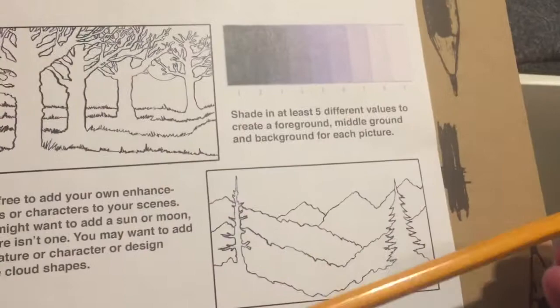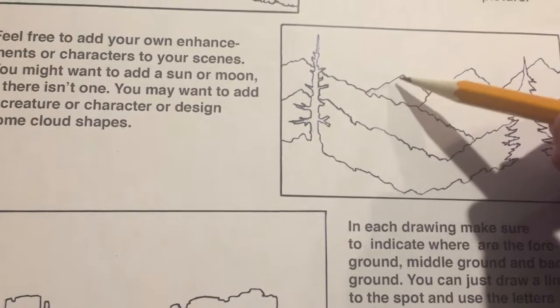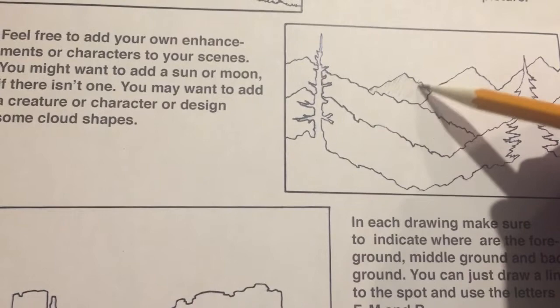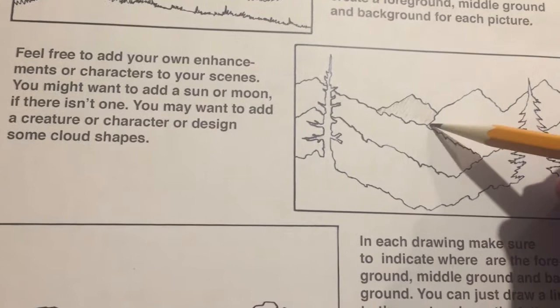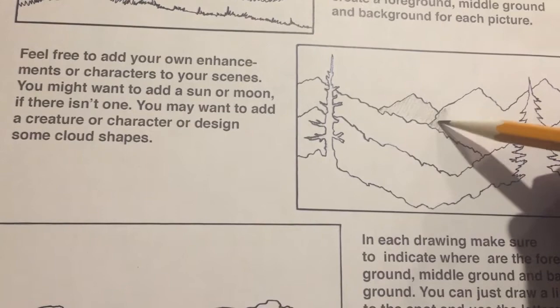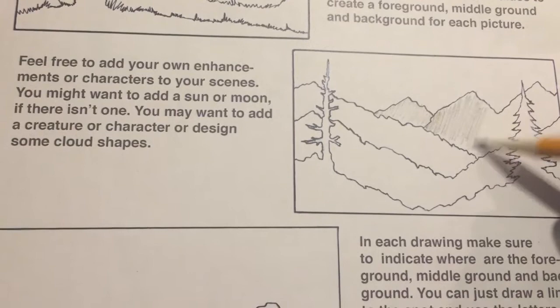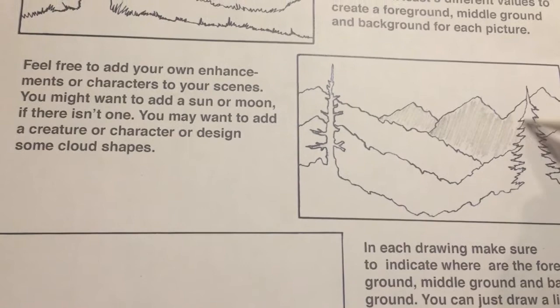I'm going to start with this one and begin at the back. Remember: with foreground, middle ground, and background, your foreground is going to be darkest, your middle ground is in the middle, and your background is going to be your lightest colors. So this is just a quick shade — I can color right through that tree because I know I'll do it darker later.